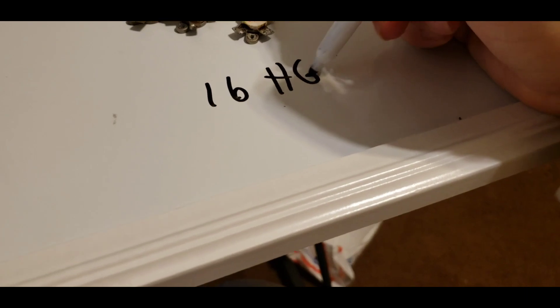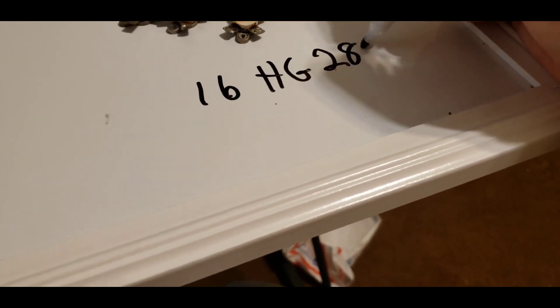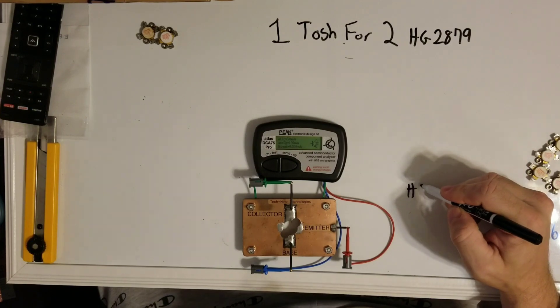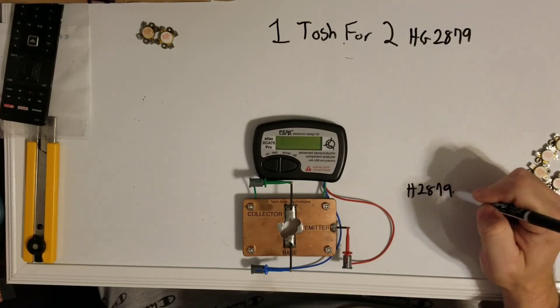All right, so we are good and done here. So let's see how much we had here. Two, four, six, eight, ten, twelve, fourteen, sixteen. This guy just earned himself sixteen brand new HG 2879 transistors.